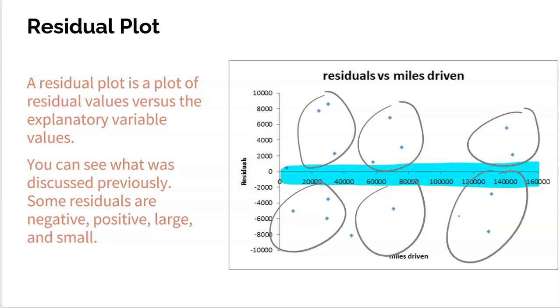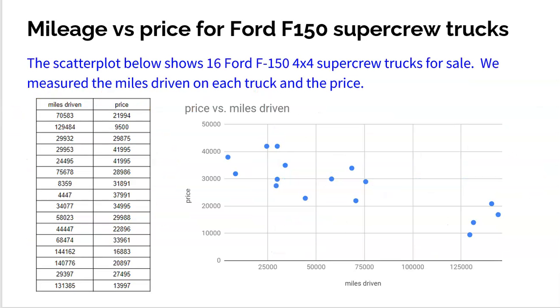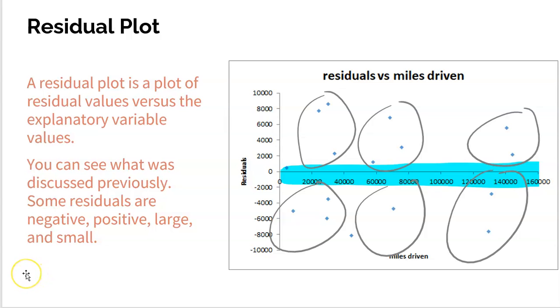That means our line went through our data. And if a line goes through your data, it means that a linear model is appropriate. So the two things I'm going to check off here are scatter plot looks somewhat linear, residual plot shows no pattern. Yes, a linear model is appropriate.